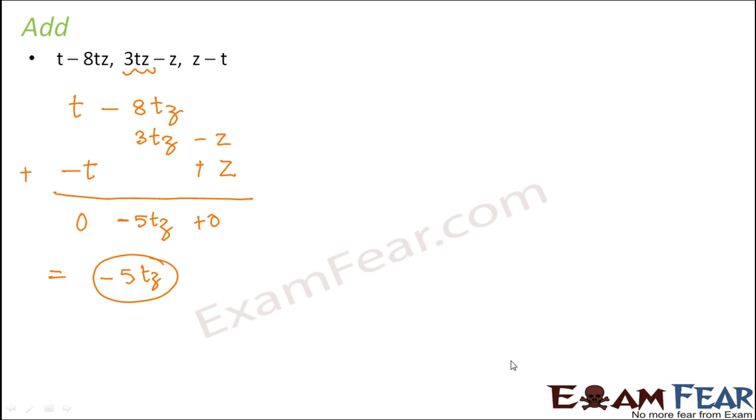So let us look at the second example. So let's say you have three expressions: a plus b minus 3, b minus a plus 3, and a minus b plus 3. So when you look at these three expressions, you feel that they are so confusing. All of them have the same three terms, a, b, and 3. But there is a change in sign.